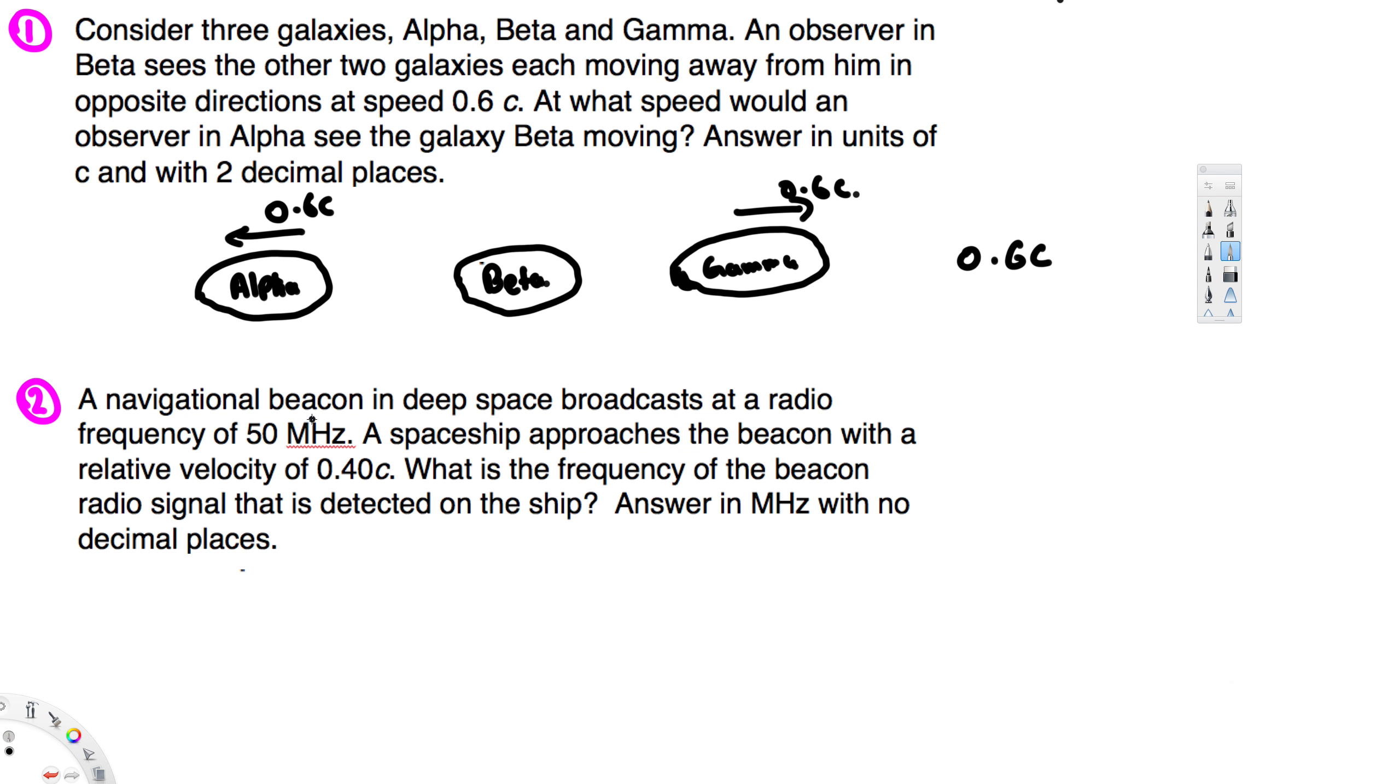A navigational beacon in deep space broadcasts at a radio frequency of 50 megahertz. A spaceship approaches the beacon with a relative velocity of 0.4c. What is the frequency of the beacon radio signal that is detected on the ship?